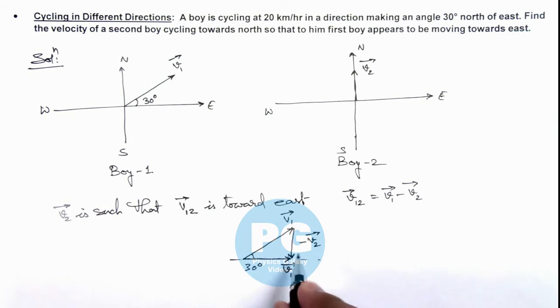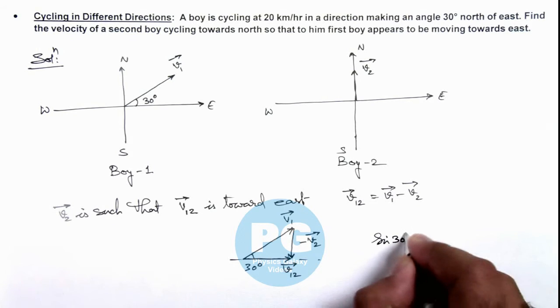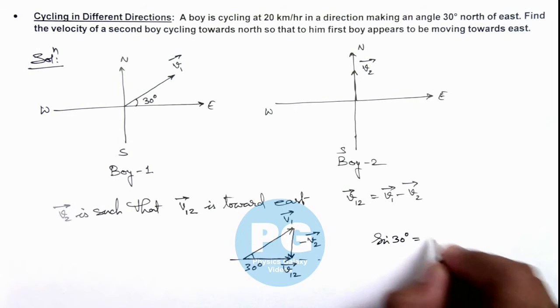So here we can see, if we wish to find the velocity of second boy, then we can directly get the value. Here the value of sine theta, that is sine 30 degrees in this triangle, is equal to magnitude of v2 by v1.